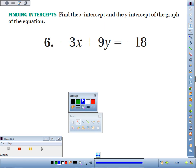Number 6, we're supposed to find the x-intercept and y-intercept of the graph of the equation negative 3x plus 9y equals negative 18.